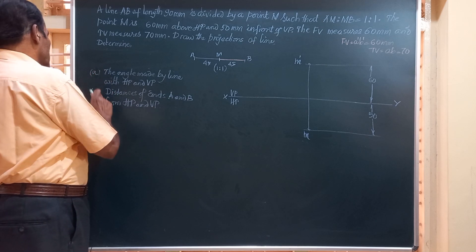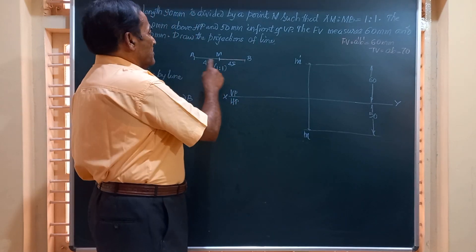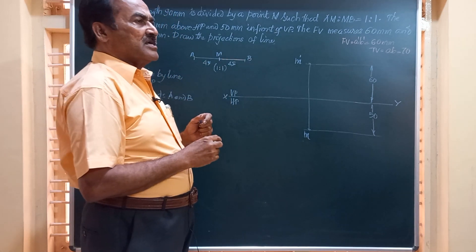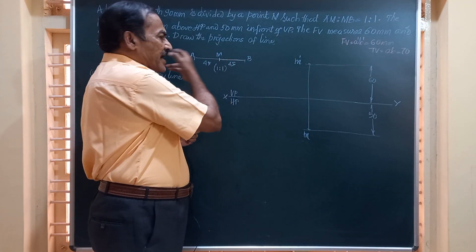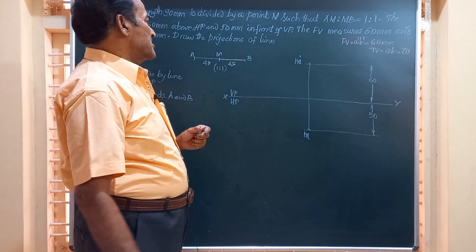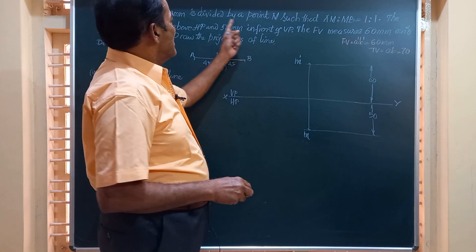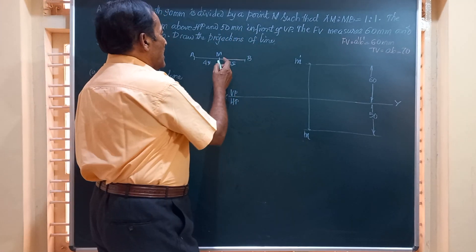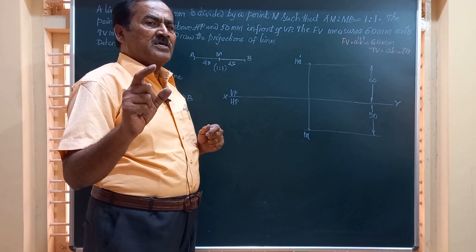Now friends, the midpoint of the line is M. I am considering only this part of the line, and after drawing the projections of this line we will be able to project these lines backwards and obtain the true length and also the front view and top view in full size. The point M is 60 mm above HP and 50 mm in front of VP. I will mark M dash and M representing the front and top views of point M at the given distances.